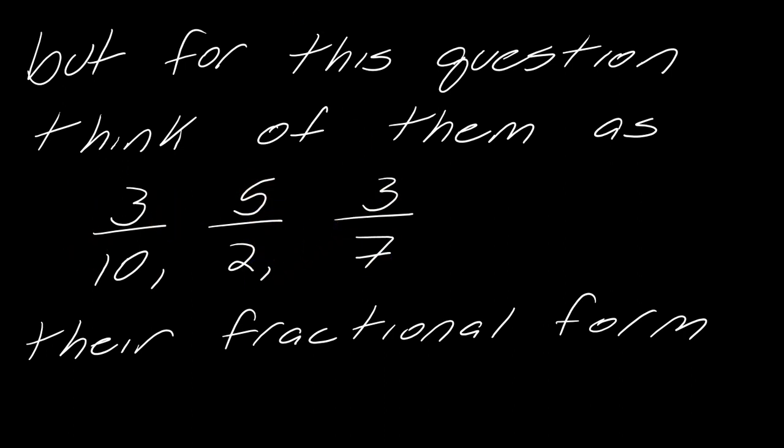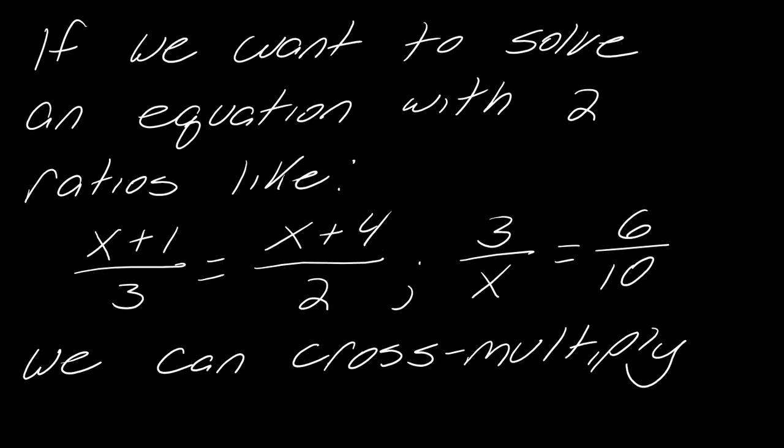What we want to do here is figure out why is it that if we have an equation with two ratios - say something like (x+1)/3 (this is one ratio) equals (x+4)/2 (this is another singular ratio), or here would be another case: 3/x equals 6/10. Why is it with these I can cross multiply?